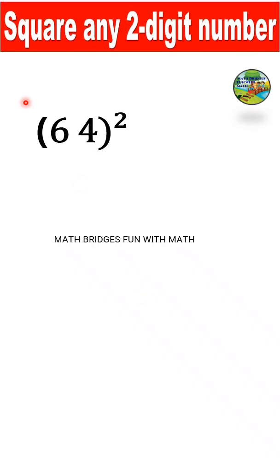Now, let's take 64 square. We will follow the same method. 6 square is how much? 36, you write 36. 4 square is how much? It is 16.